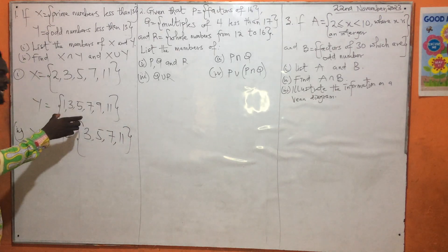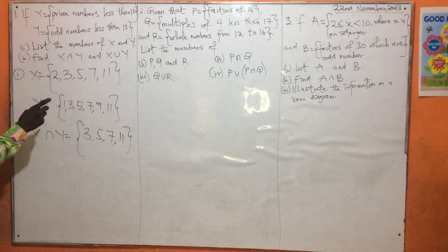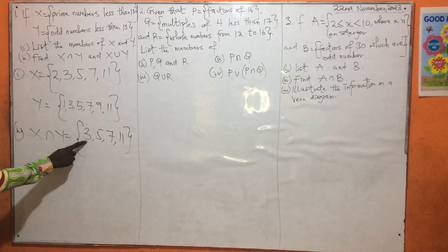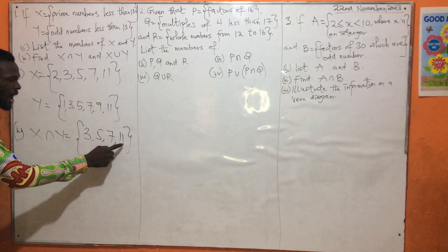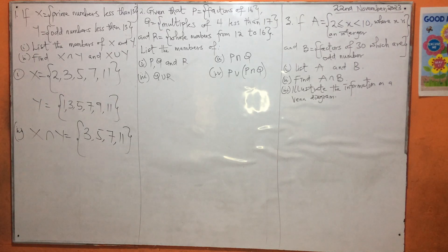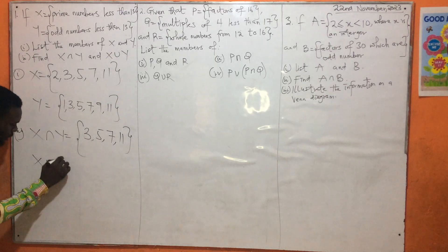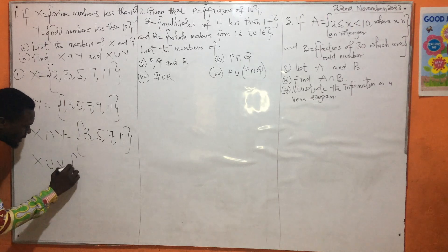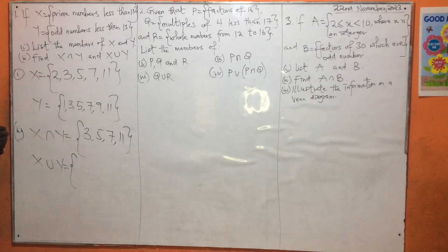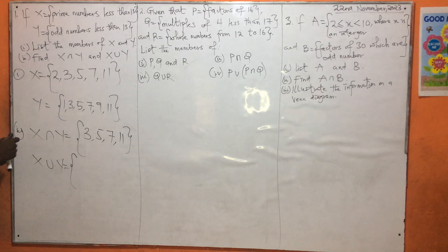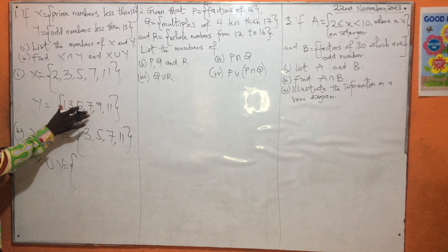X intersection Y is what is in the X element and also in the Y element. We have 3, 5, 7, and 11 — that gives you the intersection. Then with the union — we said that union is putting the sets together. When you combine the sets together, that gives you the union.